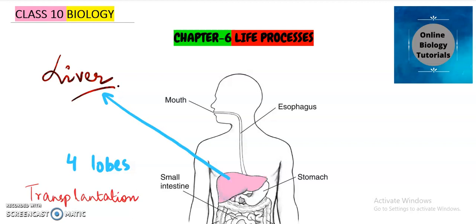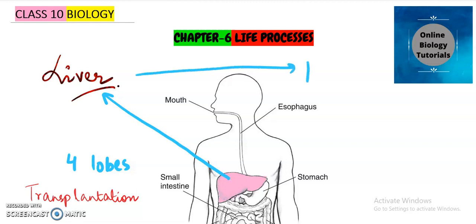The liver is a very important part of our body. Unlike other organs, it is not directly helping in digestion, but its presence is very important because it helps in producing bile. A common exam question is: which part of the body produces bile? The answer is the liver.